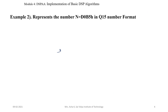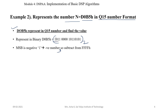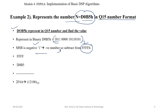Example 2: Represent the number n = D0B5 hexadecimal in Q15 format. First, convert the number into binary representation. From binary representation, the most significant bit is 1. Since the most significant bit is 1, it is a negative number. Subtract D0B5 hexadecimal from FFFF hexadecimal. After subtraction, we get 2F4A hexadecimal.